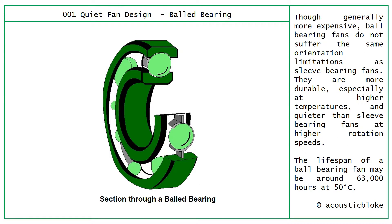Ball bearing systems use metal balls held between a central ring and an outer ring by a cage. Though generally more expensive, ball bearing fans do not suffer from the same orientation limitations as sleeve bearings — they can go vertically, horizontally, or any direction. They are more durable, especially at higher temperatures, and quieter than sleeve bearings at higher rotational speeds. The lifespan of a ball bearing fan may be around 36,000 hours at 50 degrees.